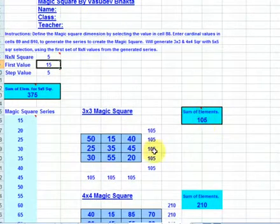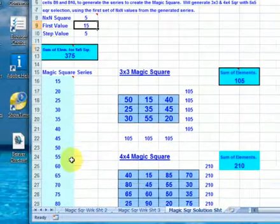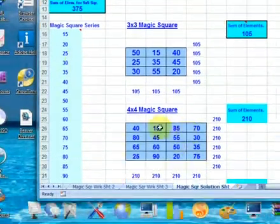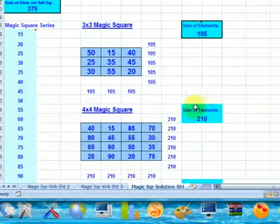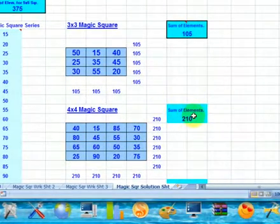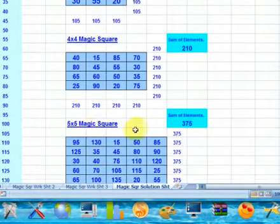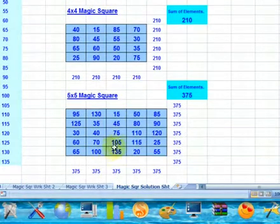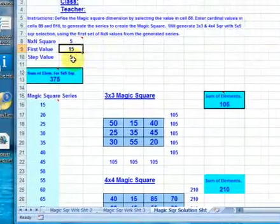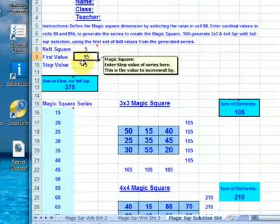And the series is displayed here, the series that's being used. First 9 numbers are used by 3x3 magic square and its sum of the elements displayed here. The next first 16 numbers are used by the 4x4 magic square and its sum of the elements displayed there. And all 25 numbers are used by the 5x5 magic square and its sum of the elements displayed here, respectively.